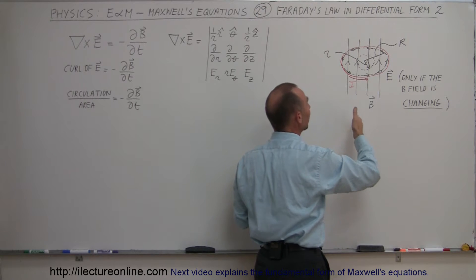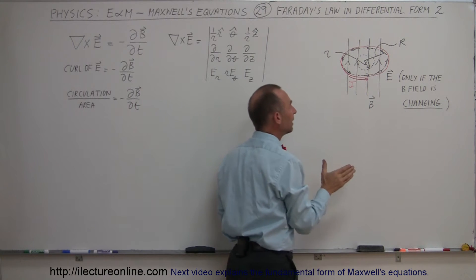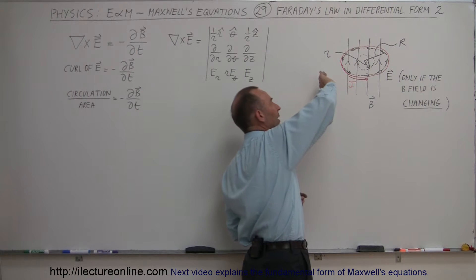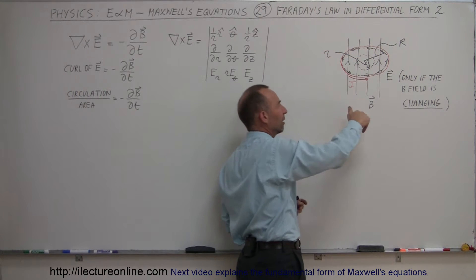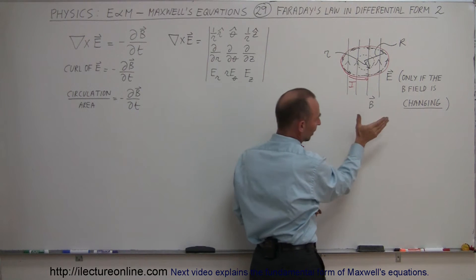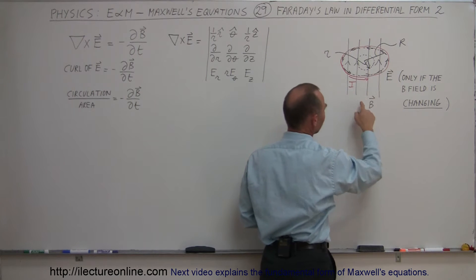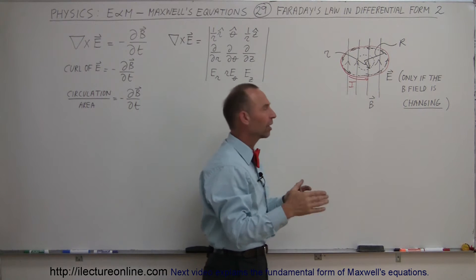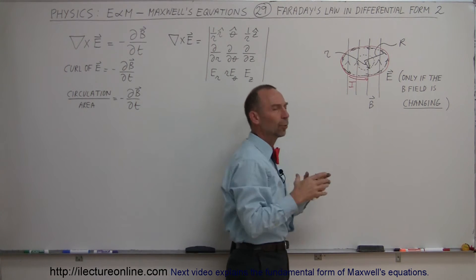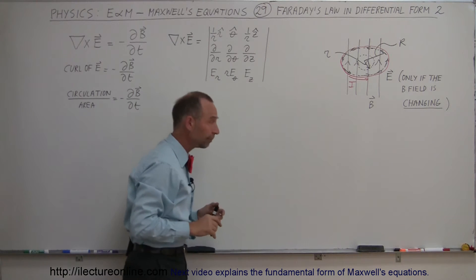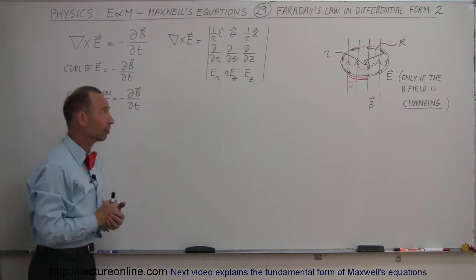If the B field is increasing, then the electric field will be oriented in this direction. If the B field is decreasing, it will be in the direction shown here. And if you put a conductor there, there will be a current associated with that electric field. That's what we call Faraday's Law.